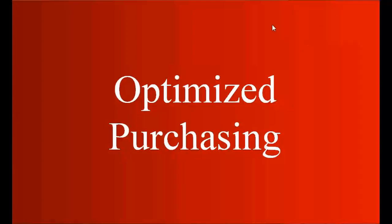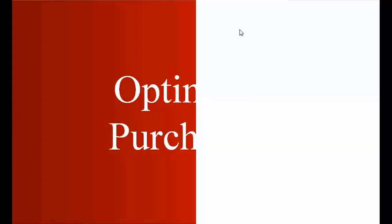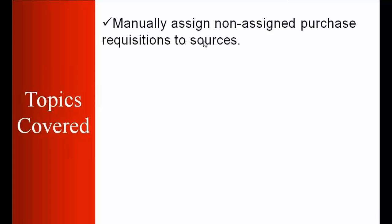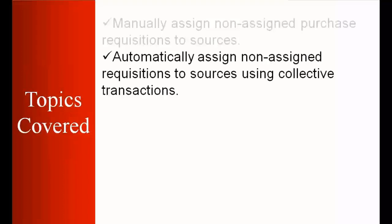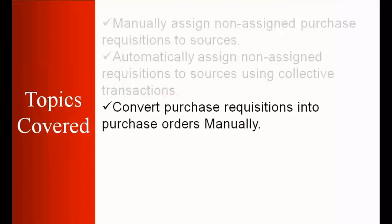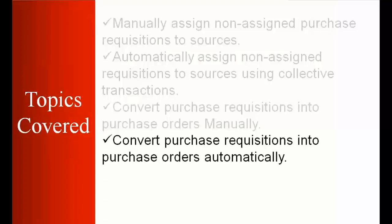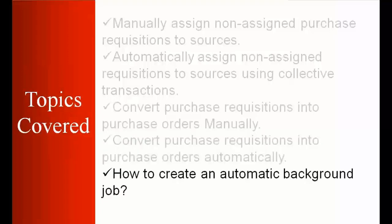Welcome to our next topic, Optimized Purchasing. Today we're going to learn these topics: manually assign non-assigned purchase requisitions to a source; automatically assign non-assigned purchase requisitions to a source using collective transactions; convert purchase requisitions into purchase orders manually; convert purchase requisitions into purchase orders automatically; and finally, how to create an automatic background job.